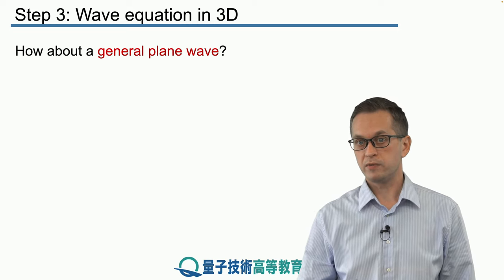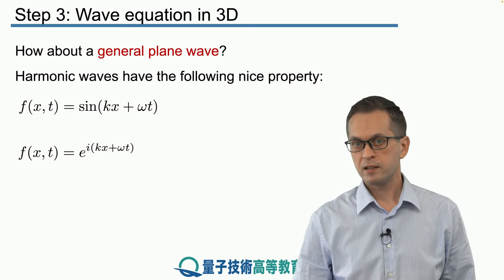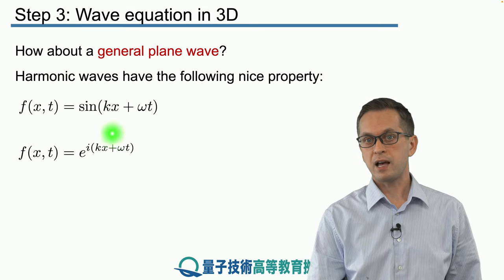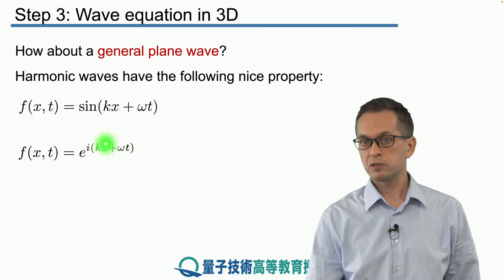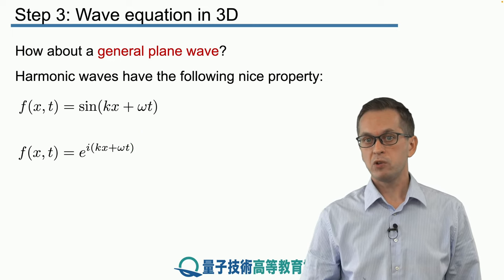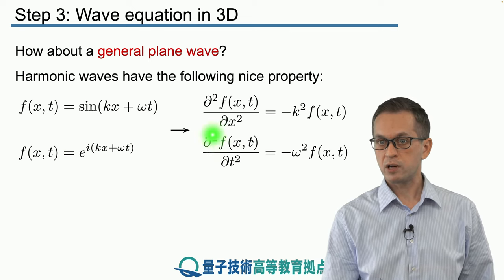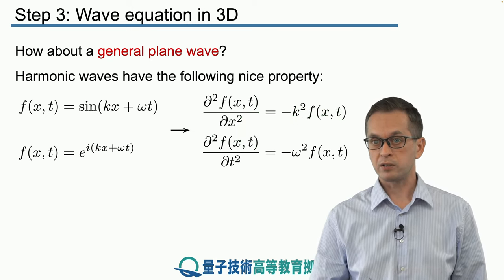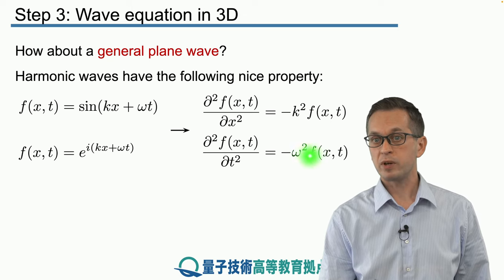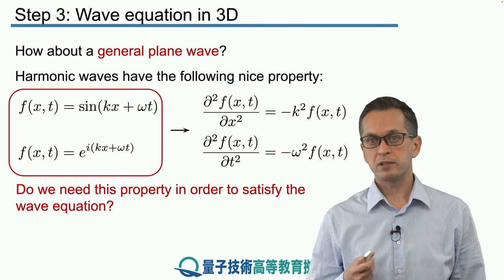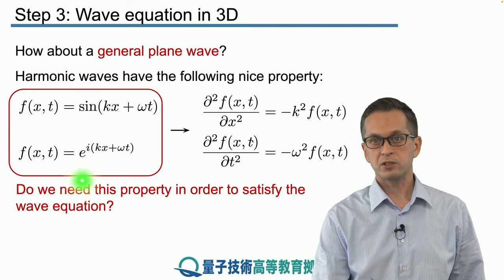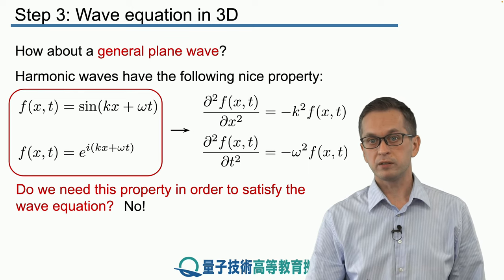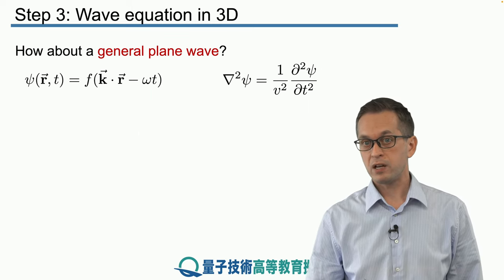But what about more general plane waves? Harmonic plane waves satisfy the wave equation because of the nice property that if you take the sine of kx plus omega t, or the exponential form, differentiating twice with respect to a spatial coordinate gives minus kx squared times the wave function, and twice with respect to time gives minus omega squared times the wave function. Does this mean the wave function must be of this sinusoidal form to satisfy the wave equation? Of course not — that would be a very restrictive requirement. Let's see that the wave equation is satisfied for general plane waves.